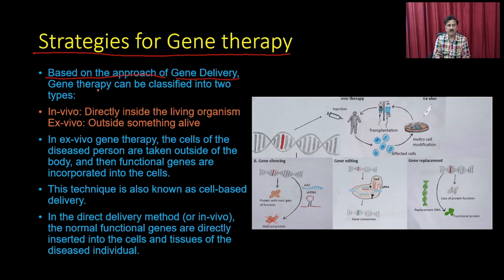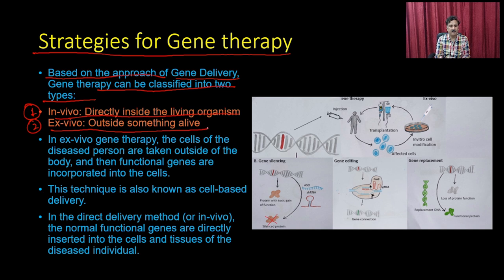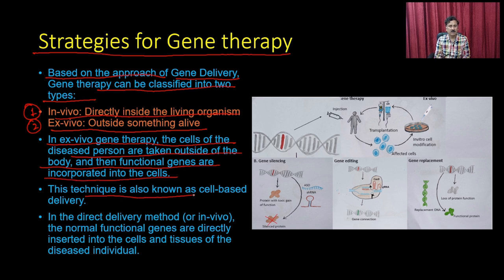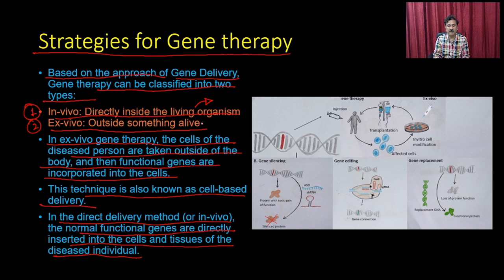Gene therapy can be in vivo — directly delivered into the living organism — or ex vivo, meaning outside. In ex vivo gene therapy, cells from the disease patient are taken out of the body and functional genes are incorporated into the cells — also known as cell-based delivery. In the direct delivery or in vivo method, normal functioning genes are directly inserted into cells and tissues of the disease individual.